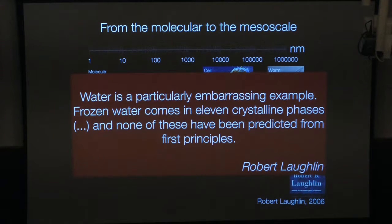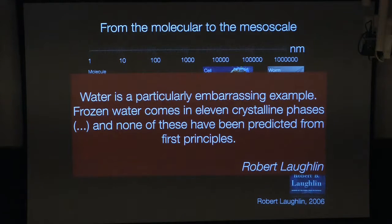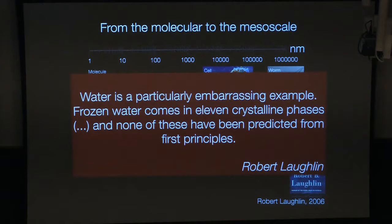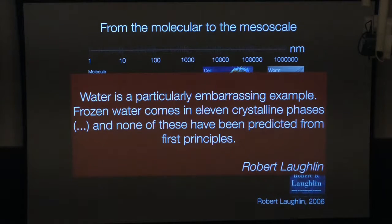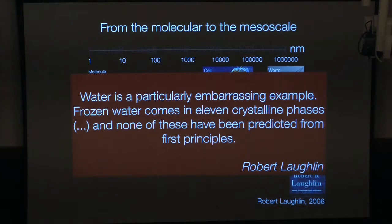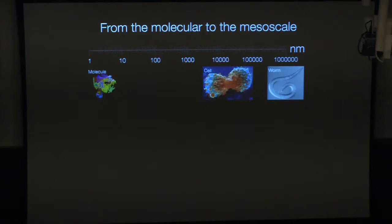The quote: 'Water is a particularly embarrassing example. Frozen water comes in eleven crystalline phases, and none of these have been predicted from first principles.' That means water — probably the most well-studied molecule on the planet — even for water, we can't predict things like triple points. All eleven different crystal lattices have been first discovered experimentally and only afterwards verified theoretically. So if we can't do this for water, how are we going to do it for a developing zebrafish embryo? That's just to put this into perspective.